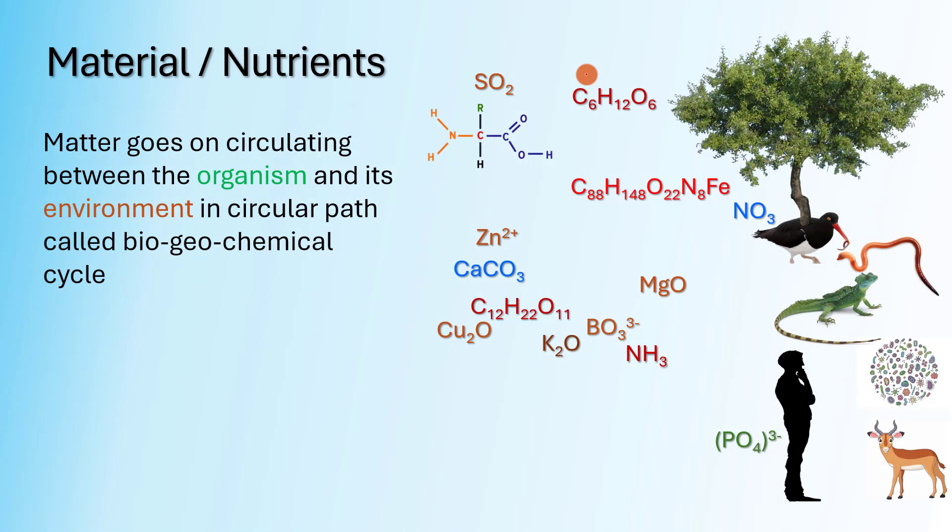So, all organisms are made up of matter or nutrients. These nutrients or matter are either present in our abiotic environment, soil, water, and air, or in living organisms. And they keep on circulating from organisms to the soil, water, and air, and back to the organism.